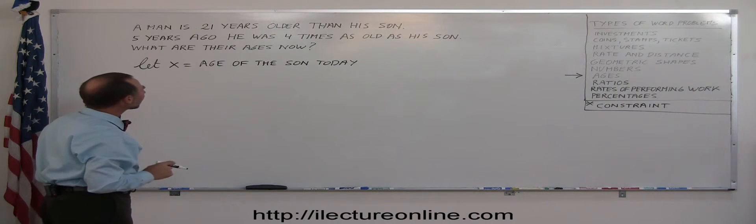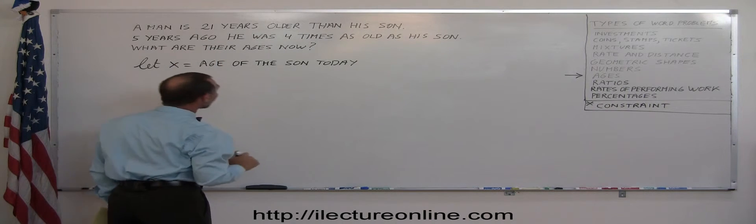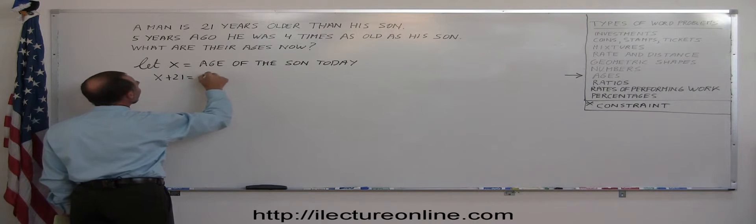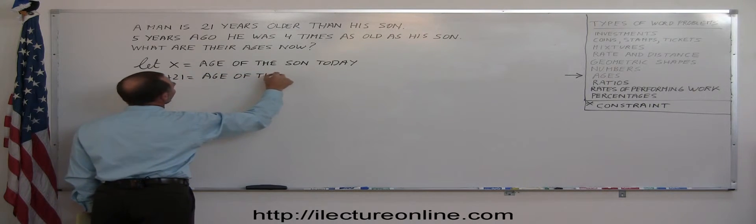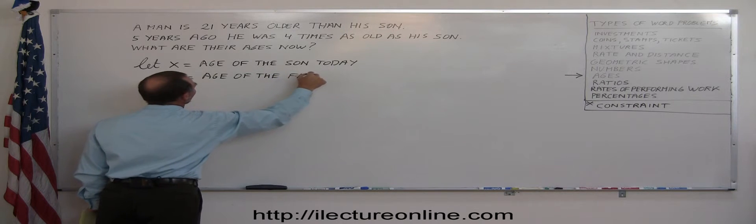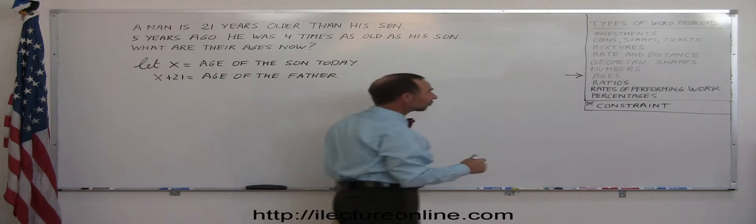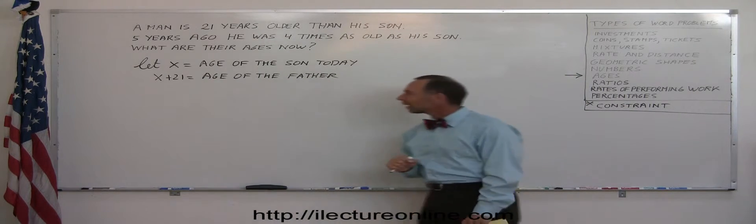So how old is his dad today? Relative to his son, his dad is 21 years older than his son. So x plus 21 equals the age of the father. Now we need a constraint. We need some sort of equation, some sort of relationship, constraint, that allows us to solve this problem.